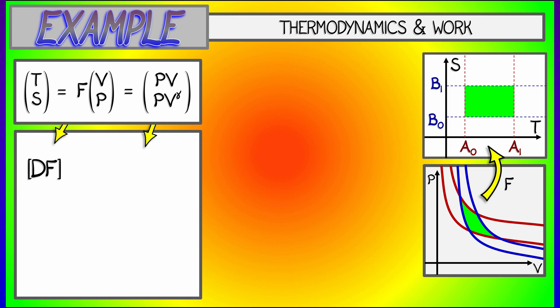When I take the partial with respect to the first input, that's V, what do I get? I get P and then gamma times PV to the gamma minus 1. When I take the partial derivatives with respect to the second input, P, I get simply V and V to the gamma.